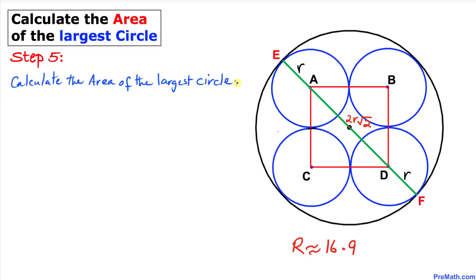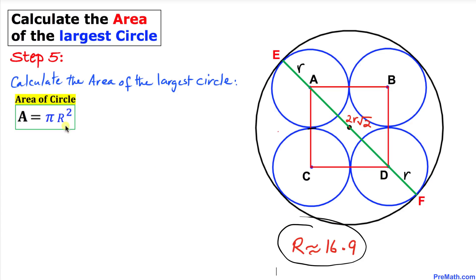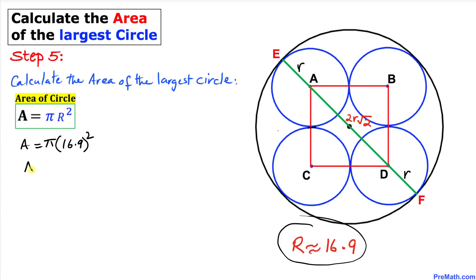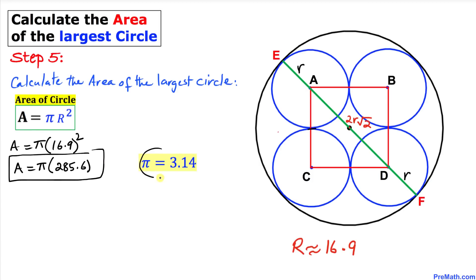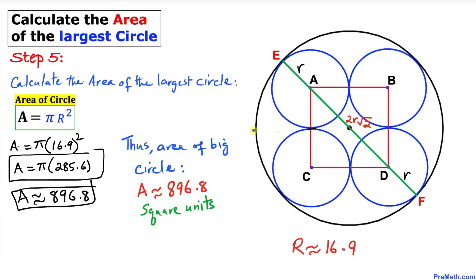For our final step, let's calculate the area of the largest circle using the formula A = πR². In our case, uppercase R is approximately 16.9, so A = π × (16.9)² = π × 285.6. Using π ≈ 3.14, the area is approximately 896.8. Thus the area of the big circle is approximately 896.8 square units.